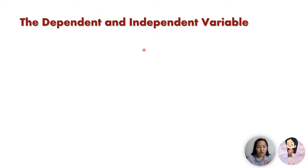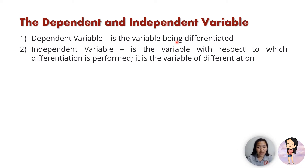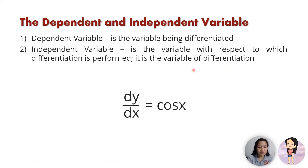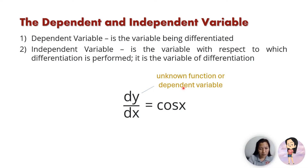In any of these equations we encounter two different types of variables: the dependent variable and the independent variable. A dependent variable is the variable that is being differentiated, and the independent variable is the variable with respect to which differentiation is performed — it is the variable of differentiation. For example, in dy/dx = cos(x), the variable being differentiated is y, so y is the dependent variable. We differentiate y with respect to x, so x is the independent variable.